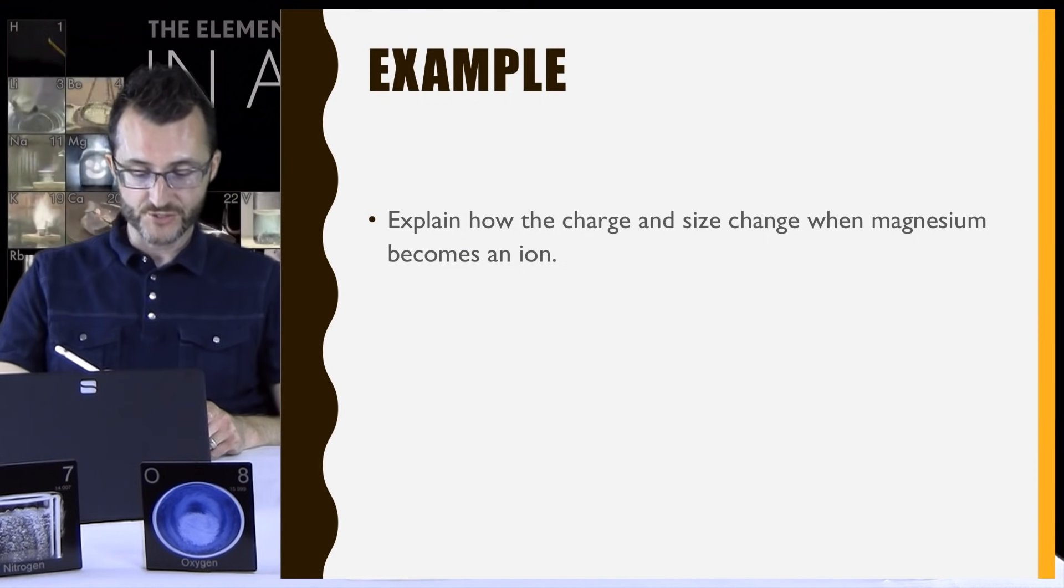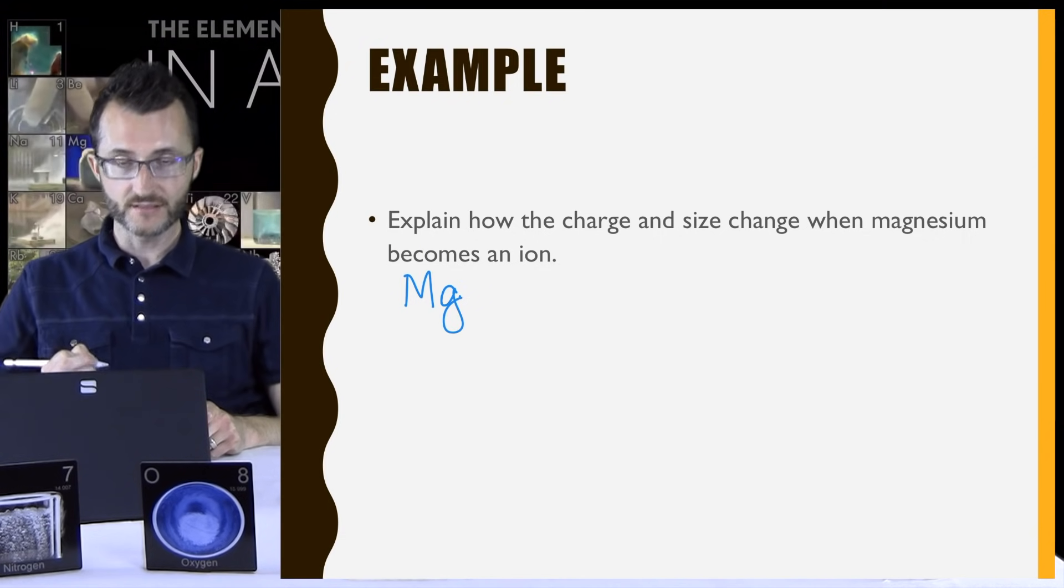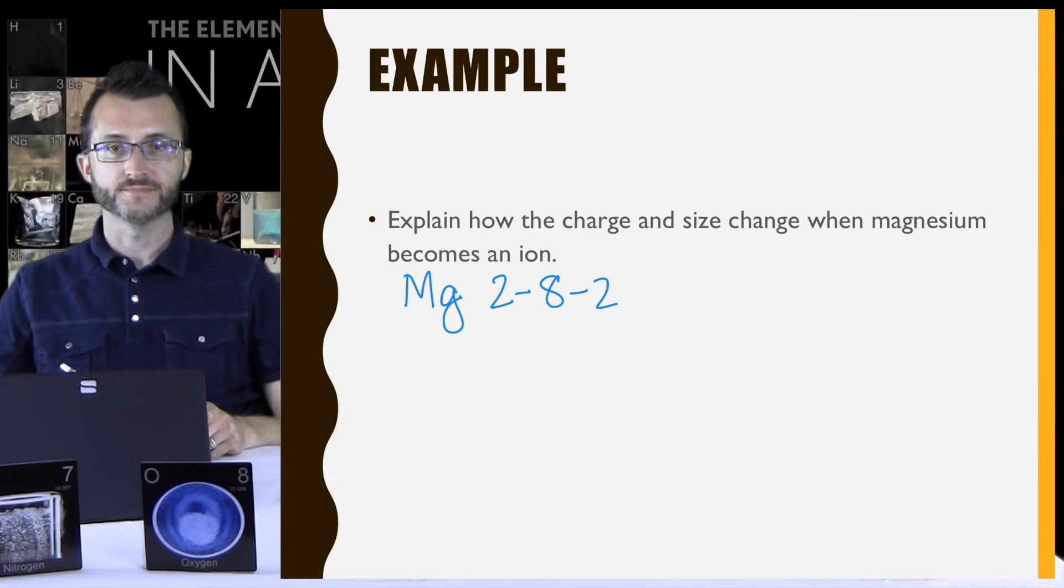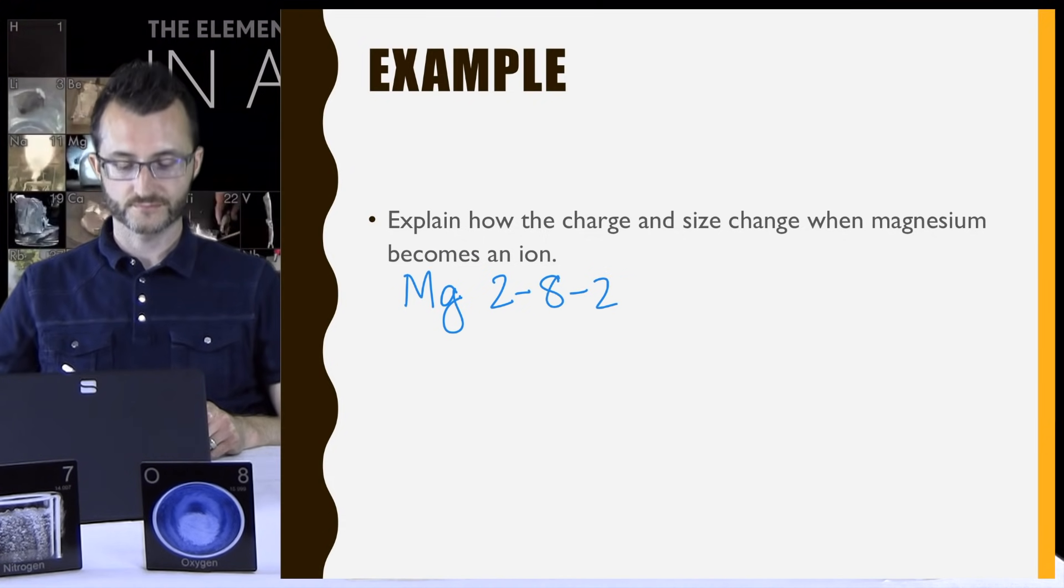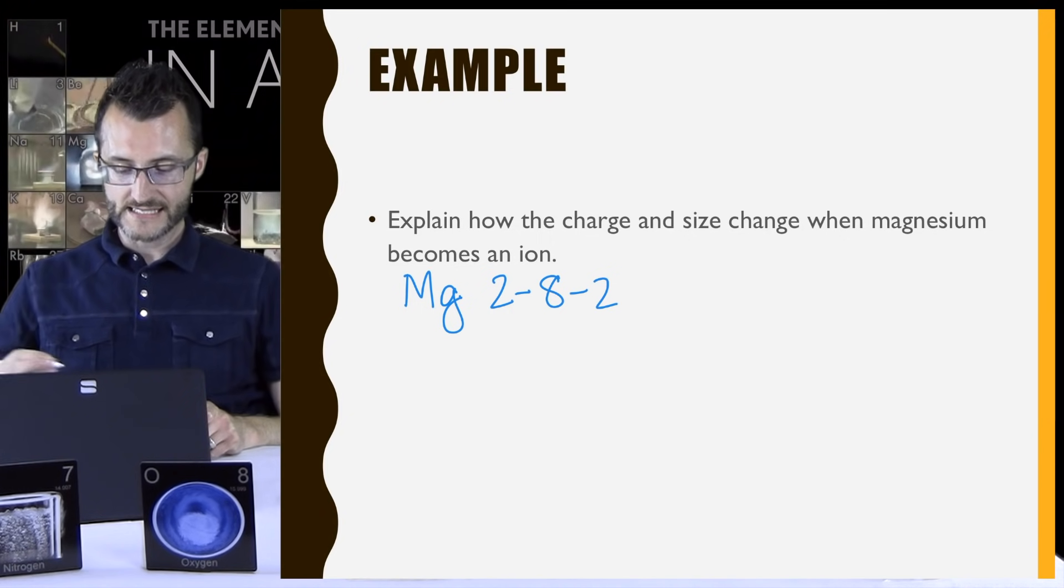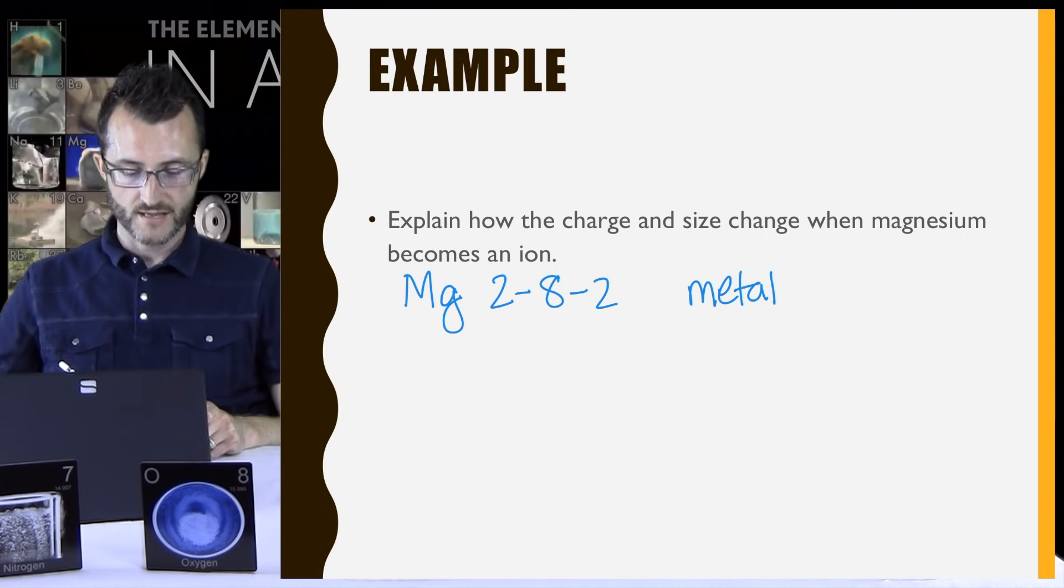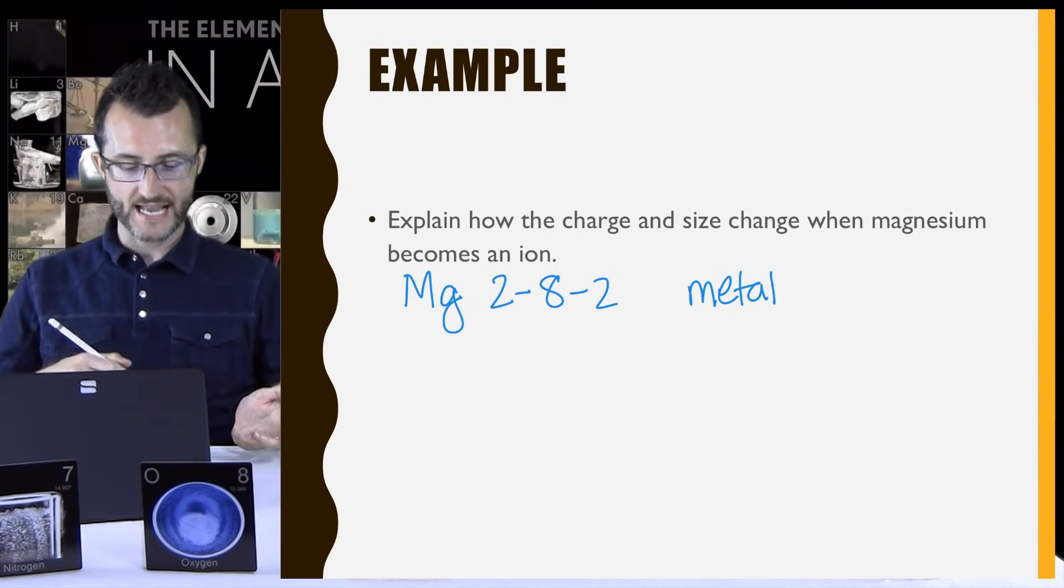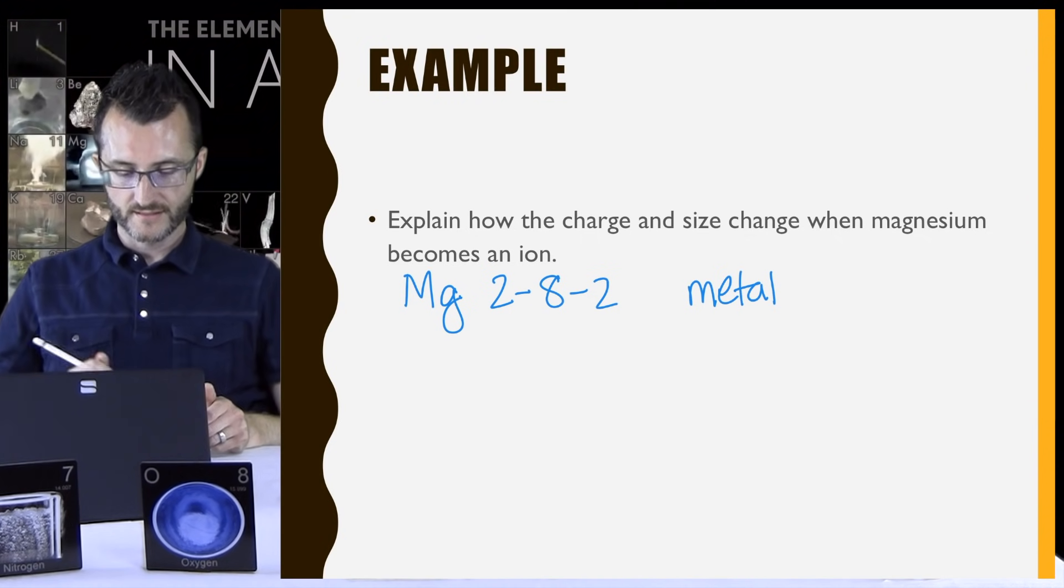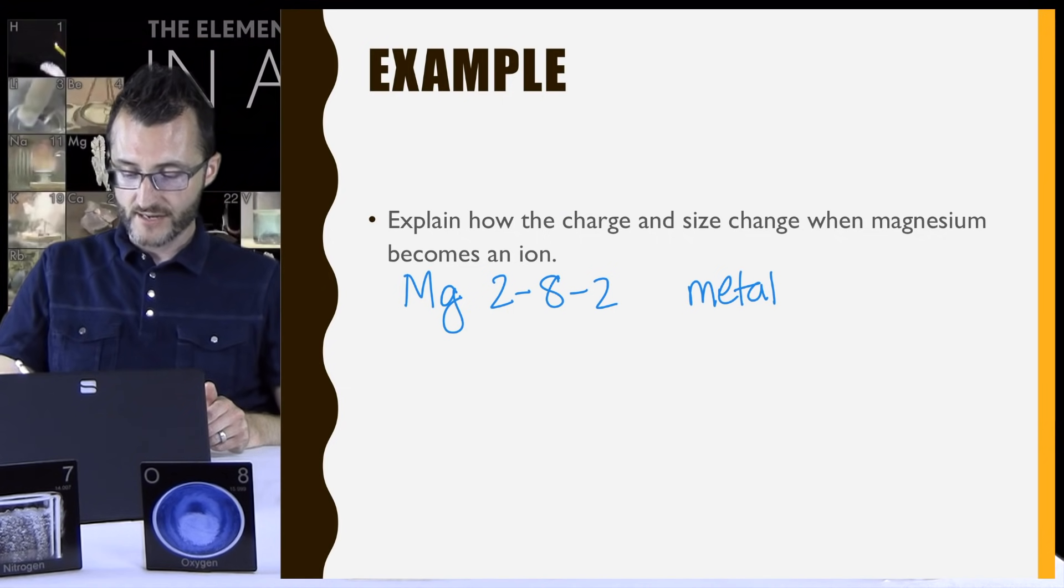All right. So magnesium is Mg. Good. I know that. And if I look it up on my periodic table, its electron configuration is 2, 8, 2. Perfect. All right. So let's apply what we just learned. What type of element is magnesium? Magnesium is a metal. Okay. And just so we can reiterate here, how do we know it's a metal? It's over on the left-hand side of the periodic table. Perfect. All right. So what do metals tend to do with electrons?